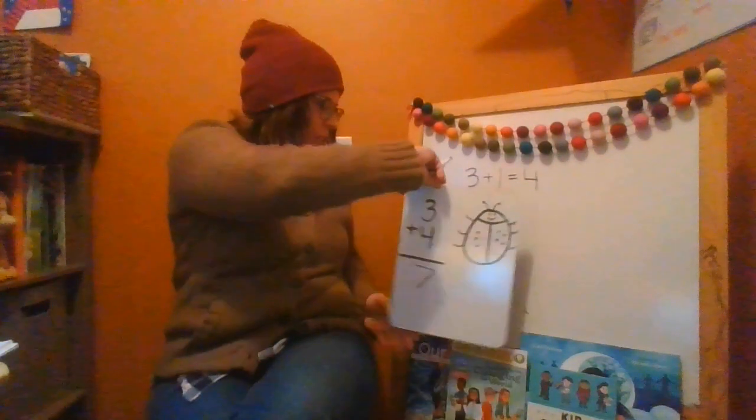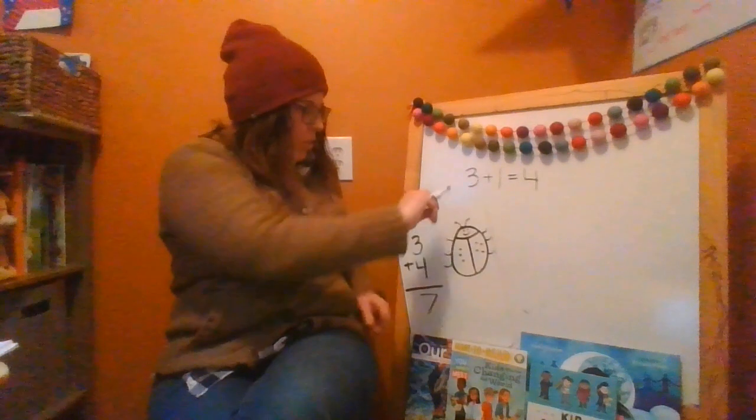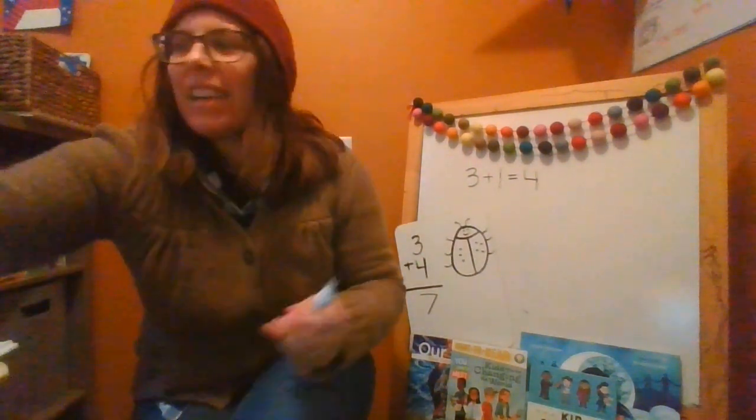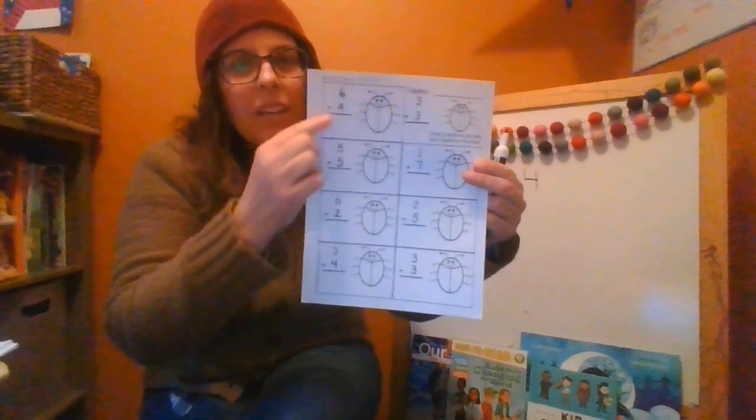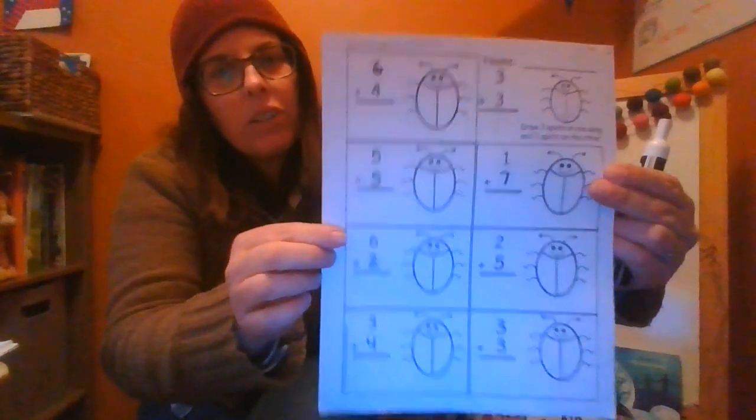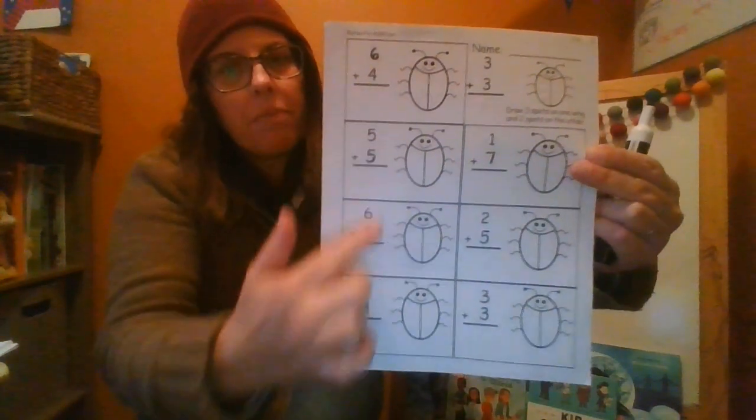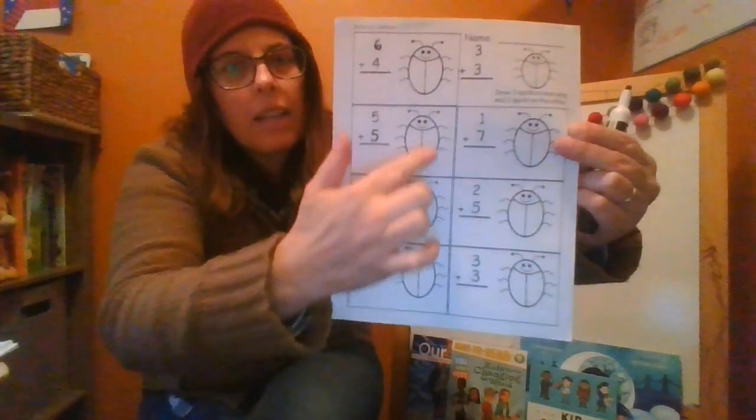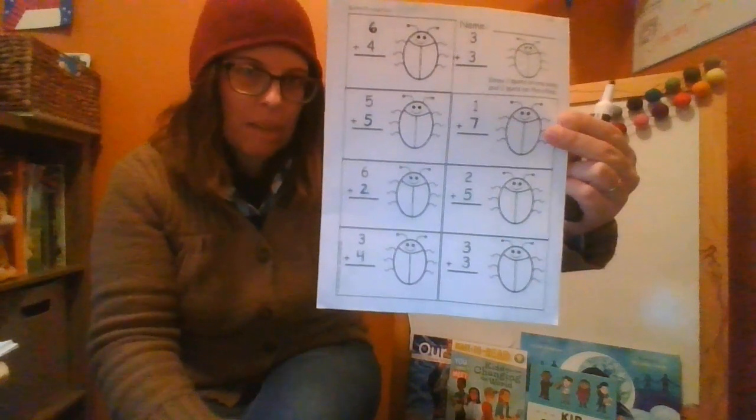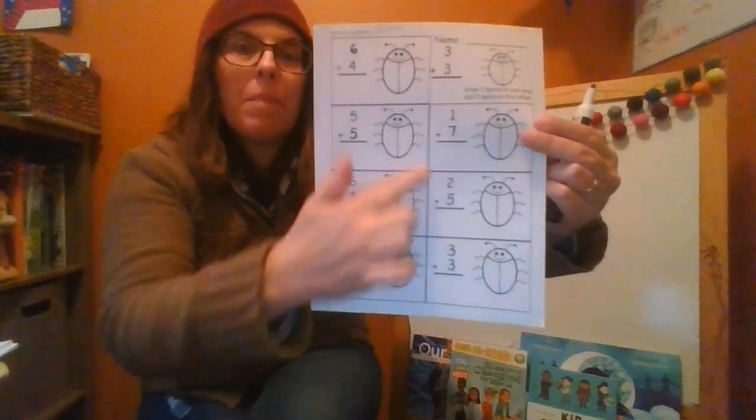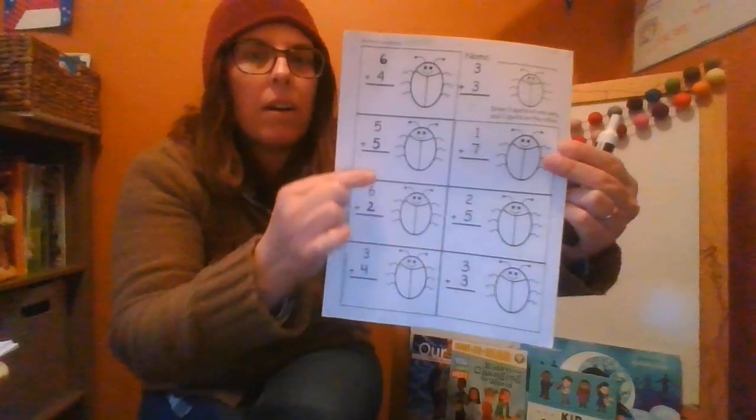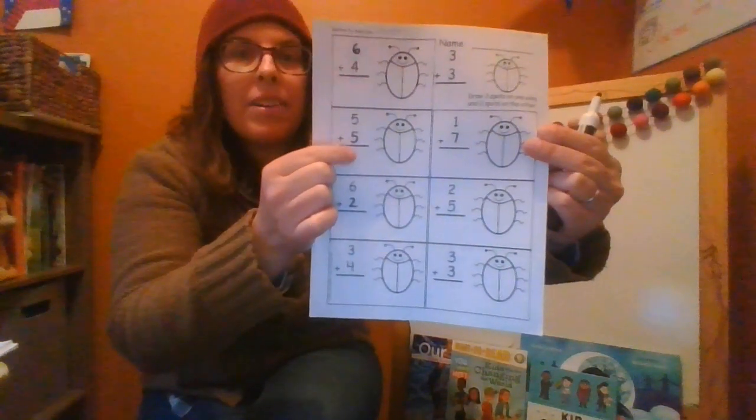Okay, so that's what you're going to do for your math today. So for each of these, I want you to look at your equation. And then you're going to put dots on one side for the first number, dots on the other side for the next number. And then figure out how many it is all together. What does it equal when you add them together? Count them all, and you'll put the answer under the line.